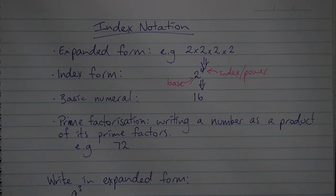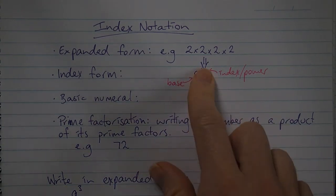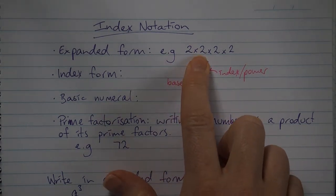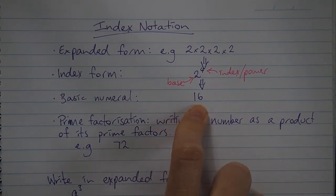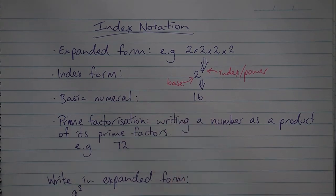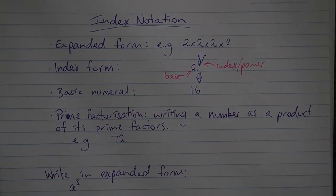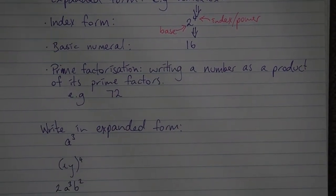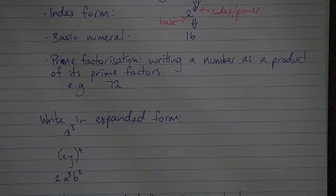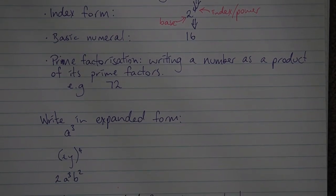You may also be asked to give your answer as a basic numeral. A basic numeral is the power evaluated, so 2 to the power of 4, or 2 times 2 times 2 times 2, gives us 16. So 16 is the basic numeral. Prime factorization involves writing a number as a product of its prime factors. I chose 72 because 72 has lots of different factors.